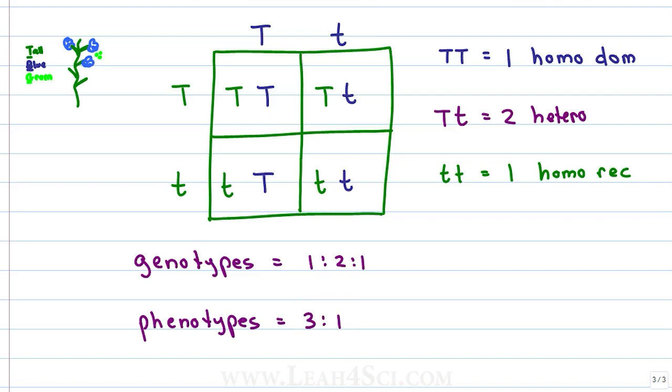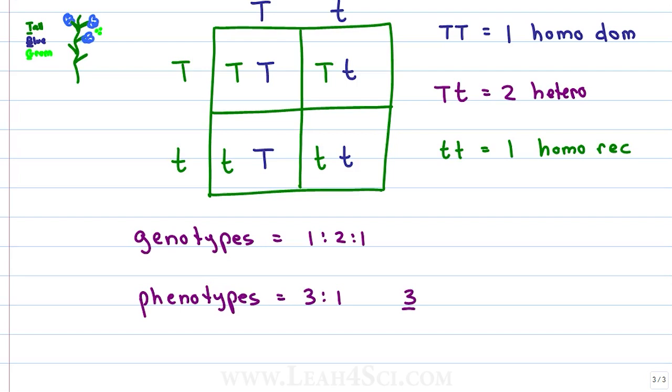This is the ratio to remember: 3 to 1, three phenotypically dominant, one phenotypically recessive. And if you look at them as fractions, because the MCAT loves to test you in fractions and decimals, we have 3 out of 4 dominant, which is 75%, and 1 out of 4 recessive, which is 25%.